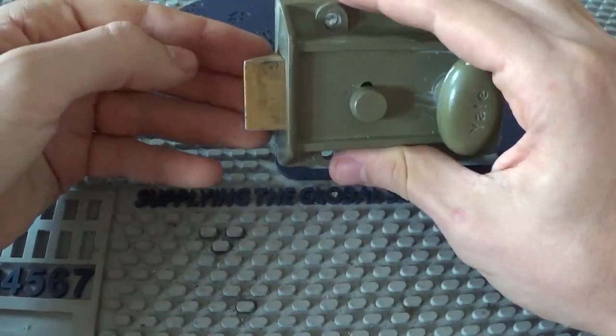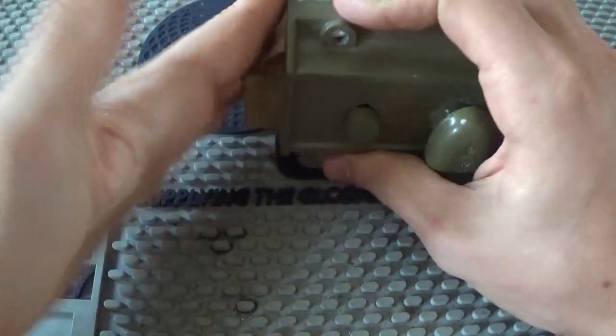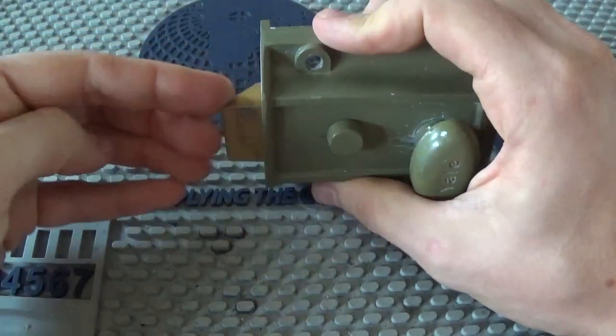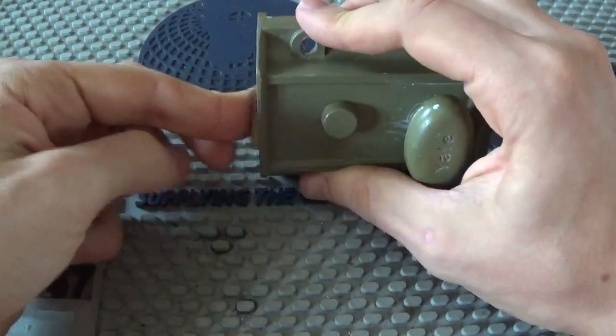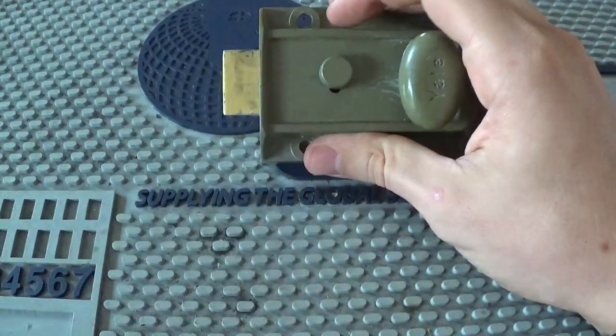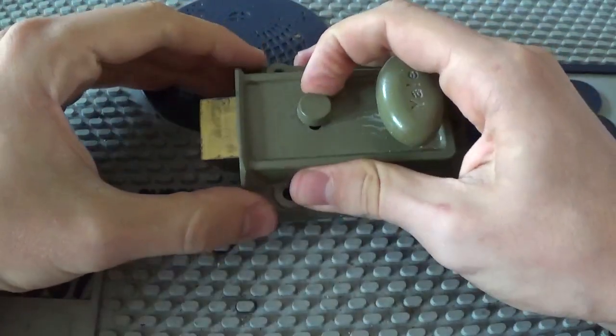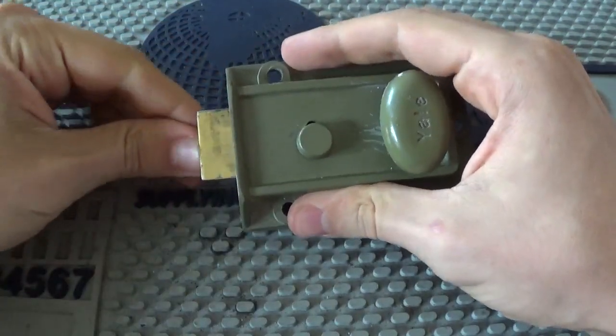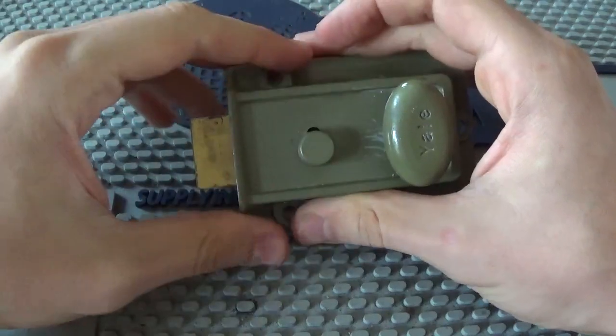This also prevents you from shimming this latch in by pushing it in because that's how you bypass these anyways. But if you lock that you cannot shim it or open the door from the outside.